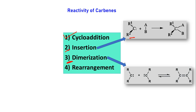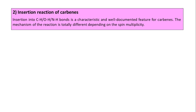Here we have a carbene molecule, and suppose there is a single bond between atoms A and B. This bond between A and B will be broken and carbene will be inserted in between A and B — that is insertion. For dimerization, it is very simple: two carbene molecules, if they are not finding any other substrate, they can dimerize with each other.